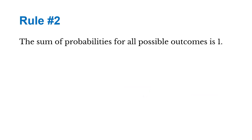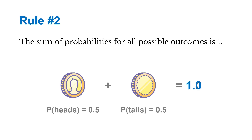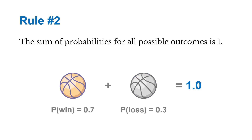Next, the sum of probabilities for all possible outcomes is going to be one. So if we toss a coin and get heads, the probability of that is 0.5, plus the probability of getting tails is 0.5. Add those together and you get one. Or going back to the basketball game, the probability of a win is 0.7 and a loss is 0.3. Add those together and we get one.